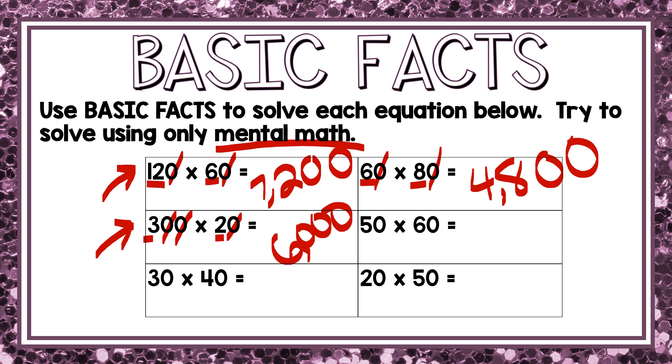Let's look at 50 times 60. 5 times 6, that is 30. 50 has one zero and 60 has one zero. And so your final answer is 3,000. So hopefully you see how basic facts helps you to solve using mental math. Why don't you work on the last two on your own and use basic facts to solve them?